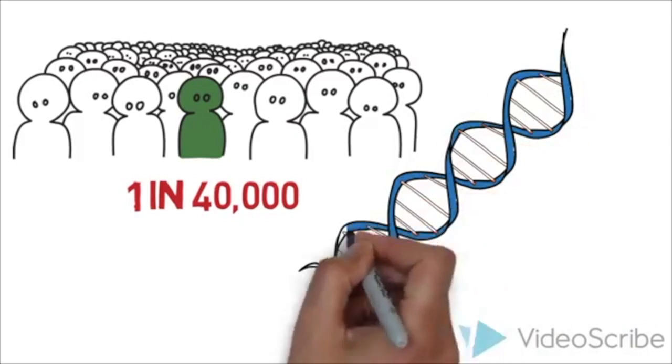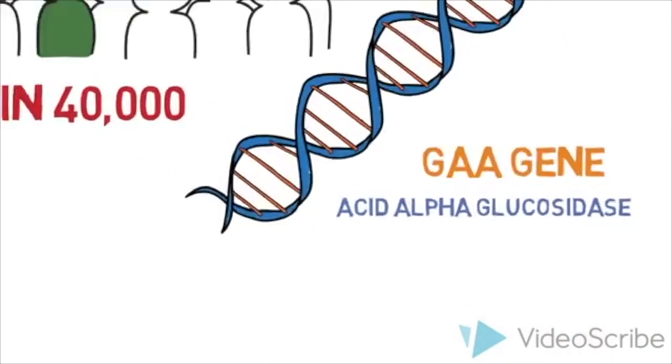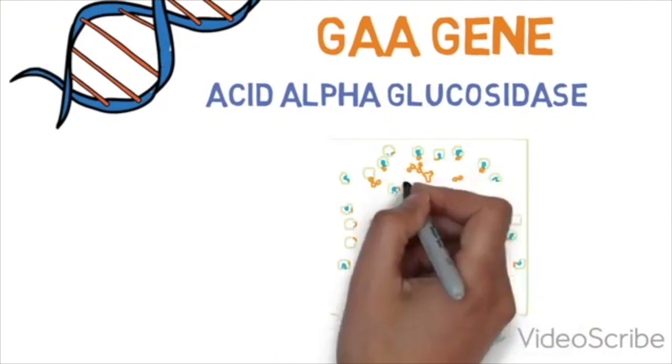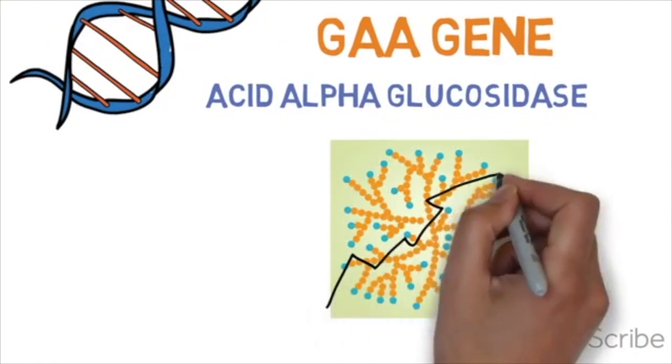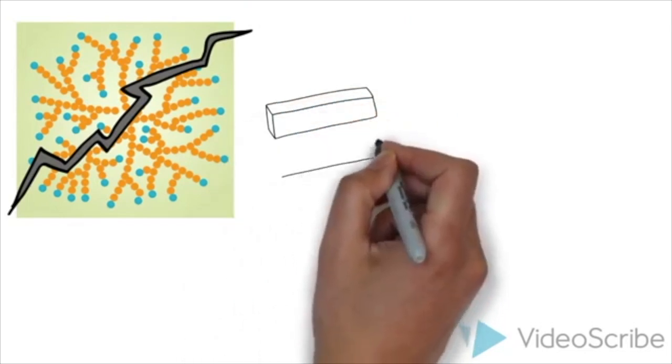It is caused by mutations in the GAA gene that makes an enzyme called acid alpha glucosidase. This enzyme is required to break down the complex carbohydrate glycogen and convert it into the simple sugar glucose.